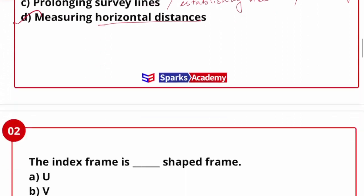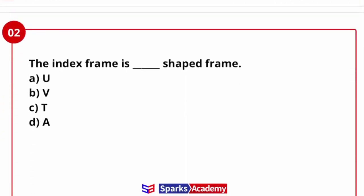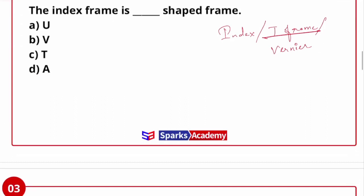Next question. Index frame is dash-shaped frame. So index frame is what shaped frame? U, V, T, or A. Actually, index frame and A frame we can use theodolite. Index frame is also known as T frame or vernier frame. Why is T frame name? It looks like T.